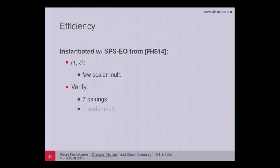Currently we only know a generic group model SPS-EQ construction to instantiate this blind signature scheme. When instantiated with this construction, the user and signer algorithms require only a few scalar multiplications, and verification is done by evaluating seven pairings and one scalar multiplication.